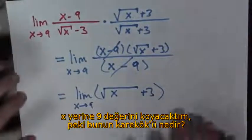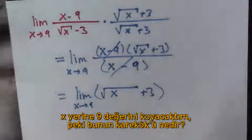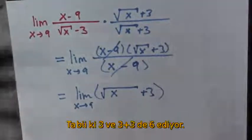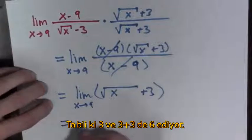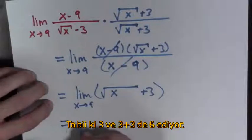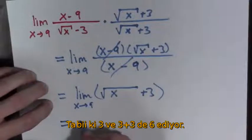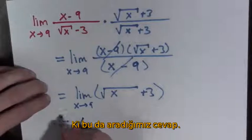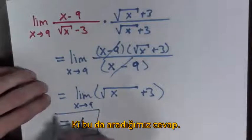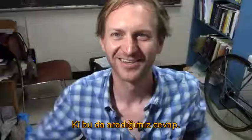So now I plug in 9. The square root of 9 is 3, so this is equal to 3 plus 3 which is 6. Done.